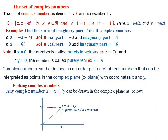In the complex number z equals x plus iy, if y is equal to zero, the number is called purely real.